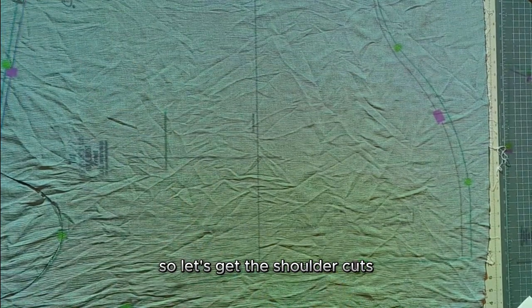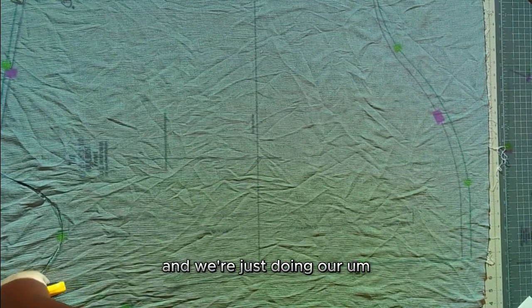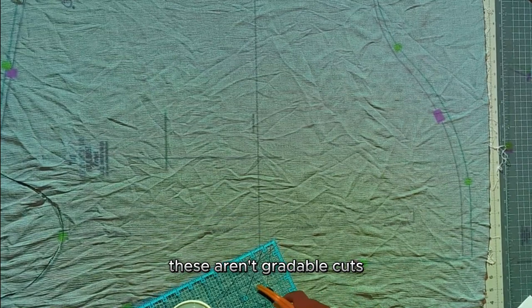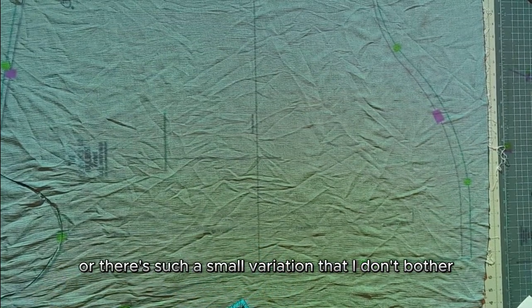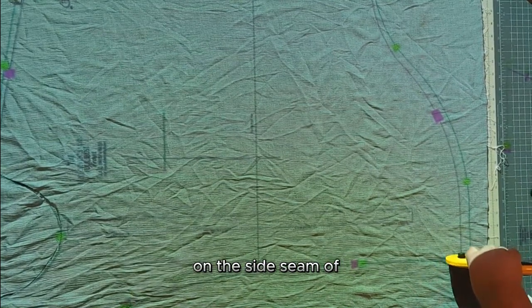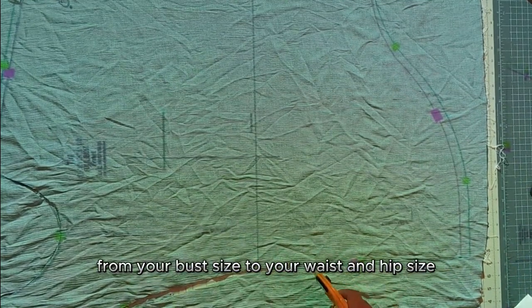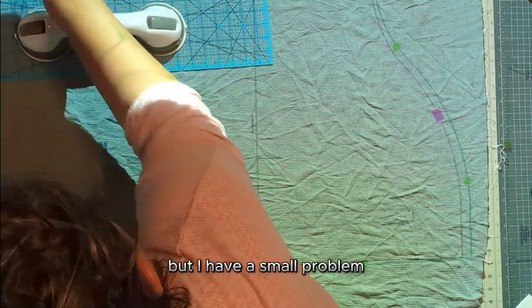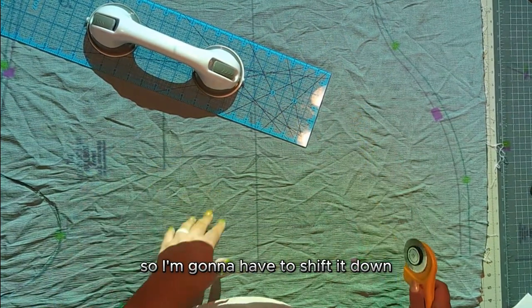So let's get the shoulder cuts and we cut the neckline and we're just doing our standard cuts. These aren't gradable cuts. Like I don't have to grade these because they are the same on most sizes, or there's such a small variation that I don't bother, but the main difference is going to be on the side seam of the arm, like under the arm, that's where you're going to grade from your bust size to your waist and hip size. But I have a small problem. And that is my pattern is too big for my projected area. So I'm going to have to shift it down.